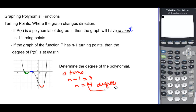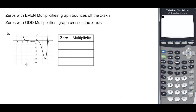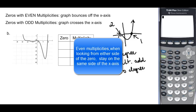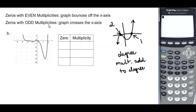Degree 4 makes sense because it's even and both ends are going up. Now let's talk about multiplicities. If I have a degree 3 polynomial, it would have exactly three zeros. Looking at this graph, we can assign multiplicities: a zero at negative 2 that goes right through — that's multiplicity 1 or odd. A zero at 0 that starts below and ends below — that's multiplicity 2 or even (it bounces off). Zeros of even multiplicity bounce off the x-axis; zeros of odd multiplicity go through.